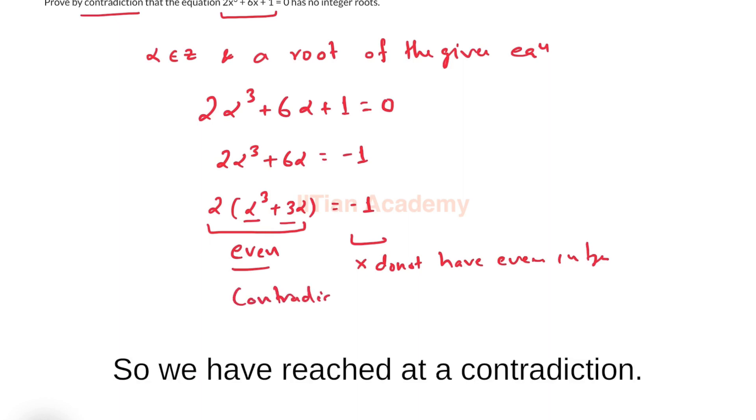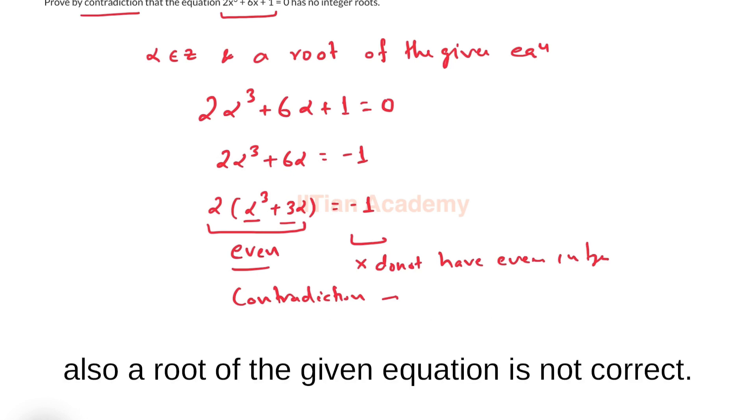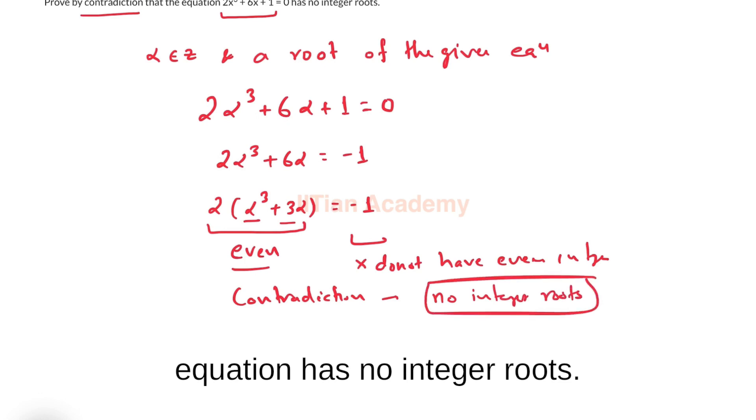So we have reached at a contradiction. Hence our assumption that alpha is an integer and is also a root of the given equation is not correct. Therefore we can say that the equation has no integer roots.